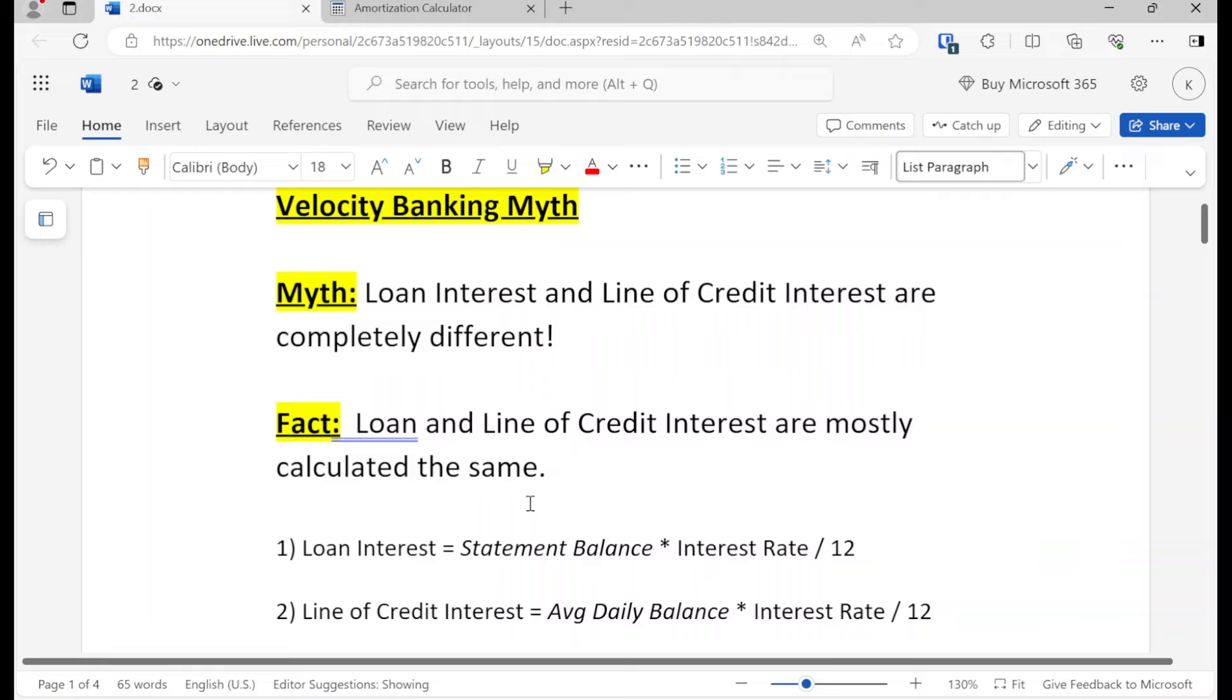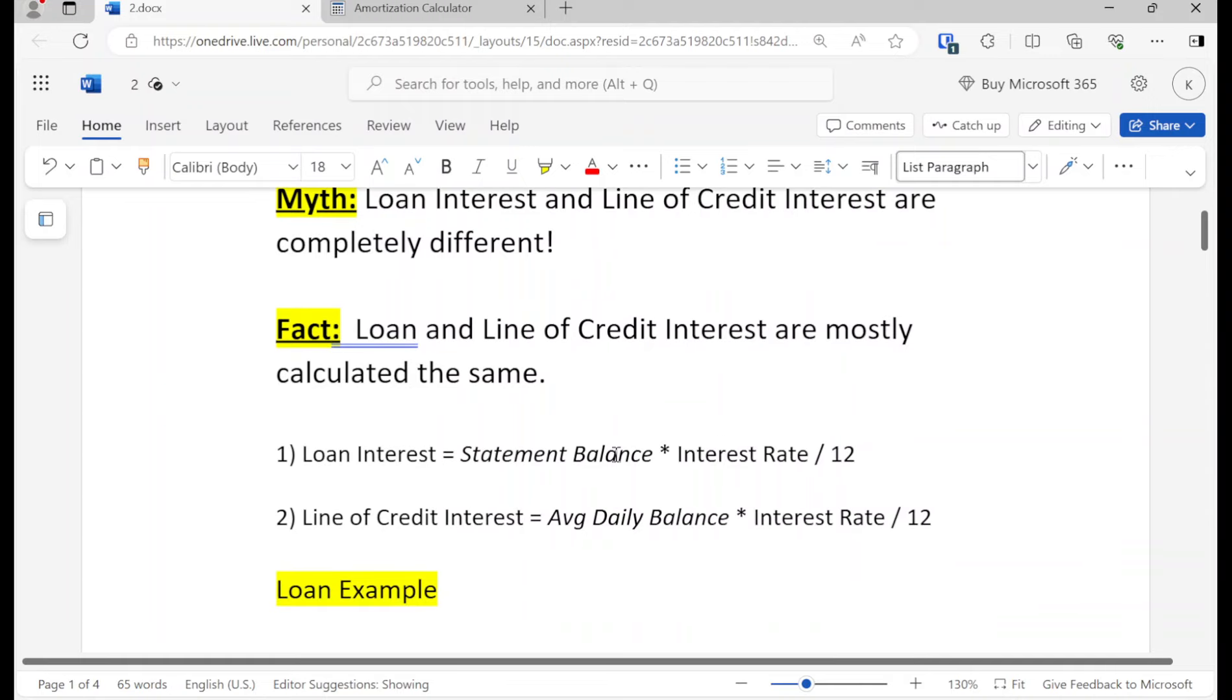So why am I talking about this? Because people say things like loans have amortized interest and lines of credit have simple interest when they both work off of simple interest. Folks, there's only simple and compound interest. The reason why debt would have to be compound interest is because you made late payments. So the way that would work is interest accrued for one month and then you didn't make the payment, so you go to the next month and then the interest accrued on top of interest. Just realize that the loan and the line of credit interest are mostly calculated the same.